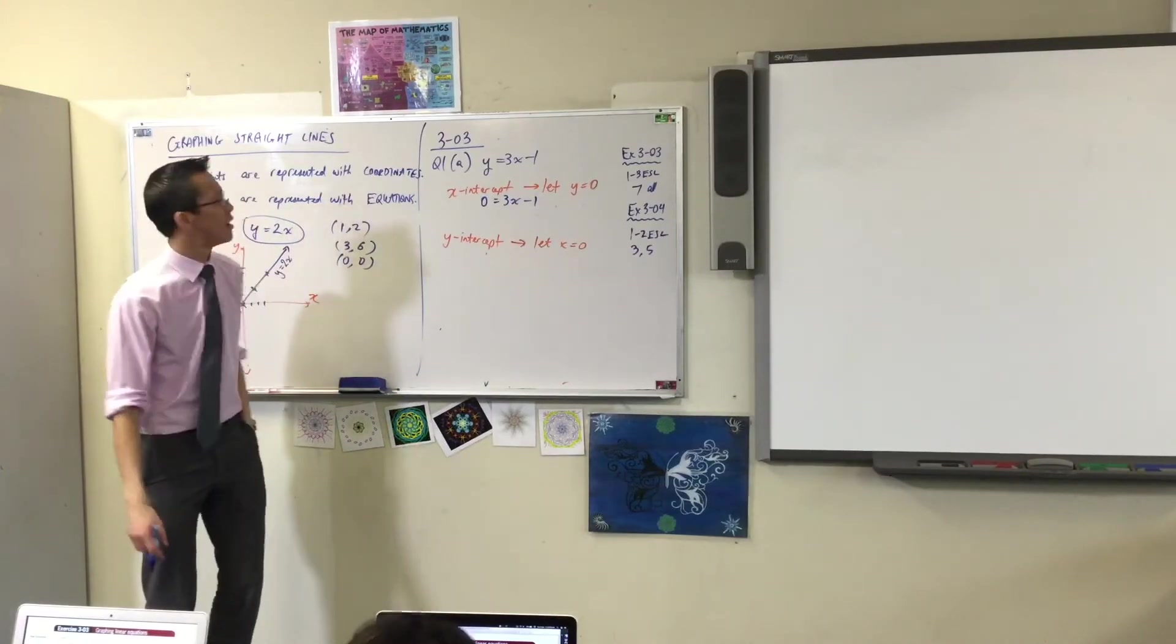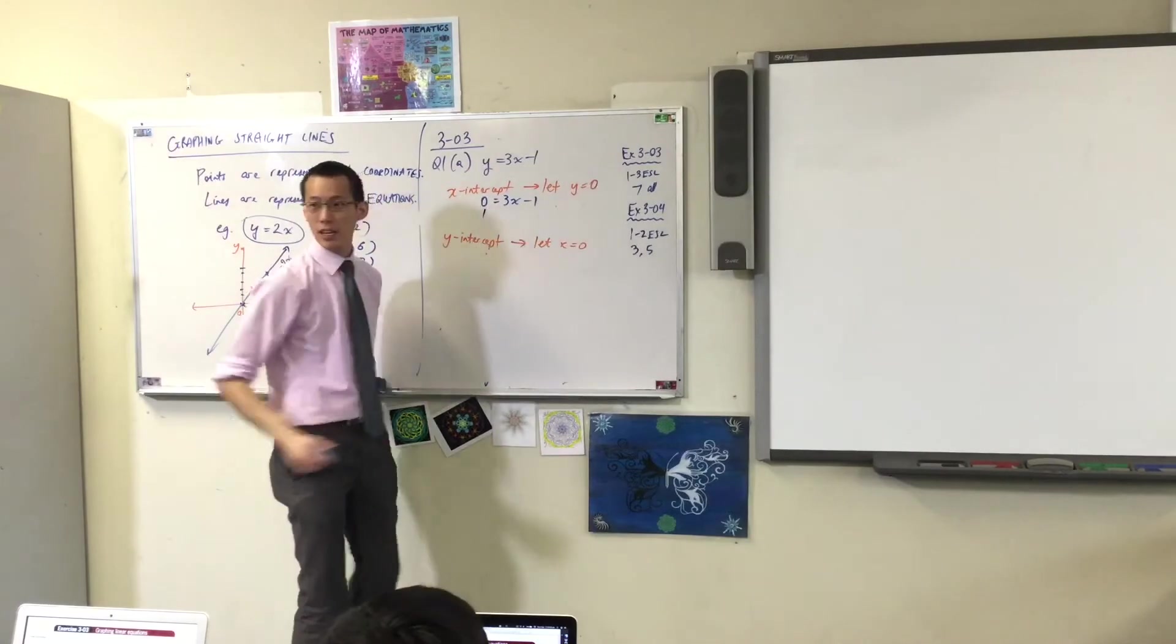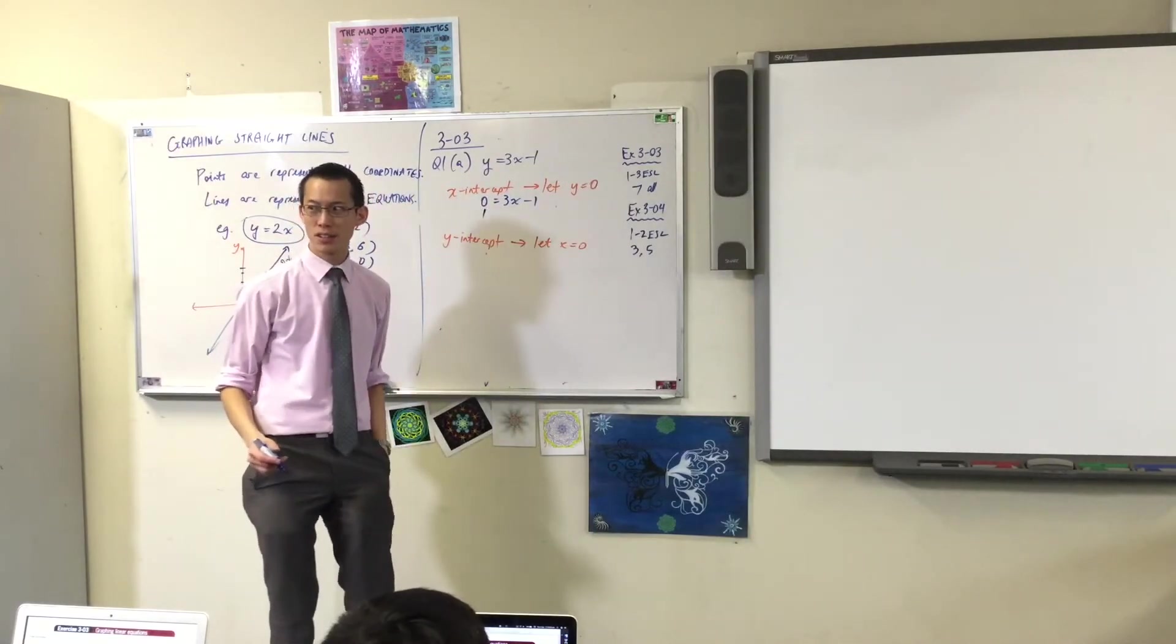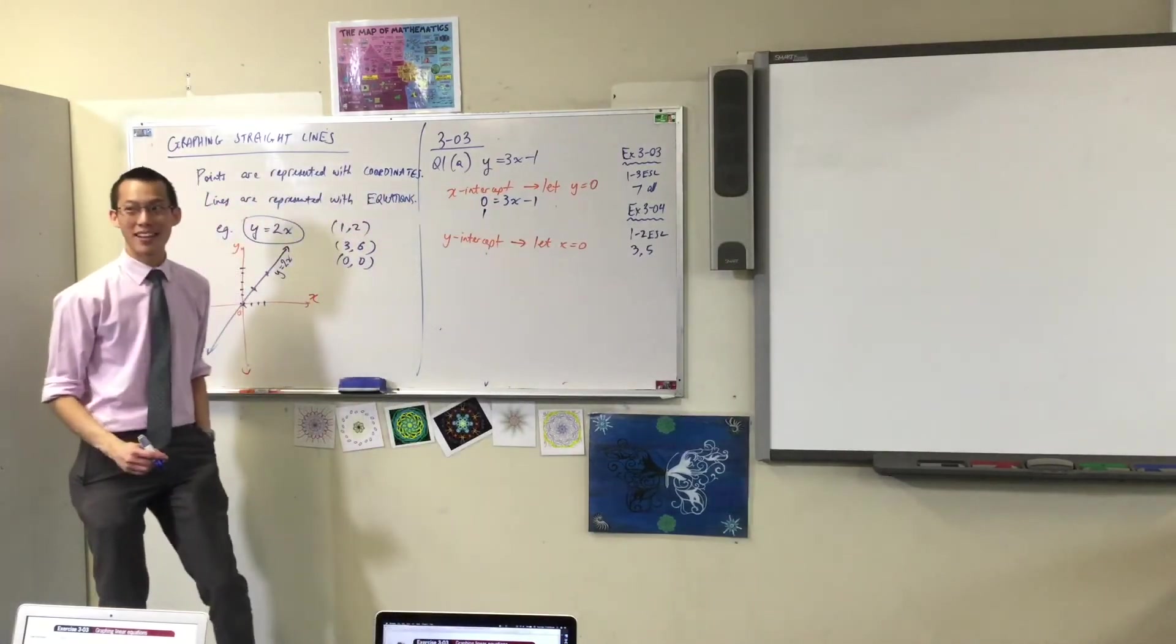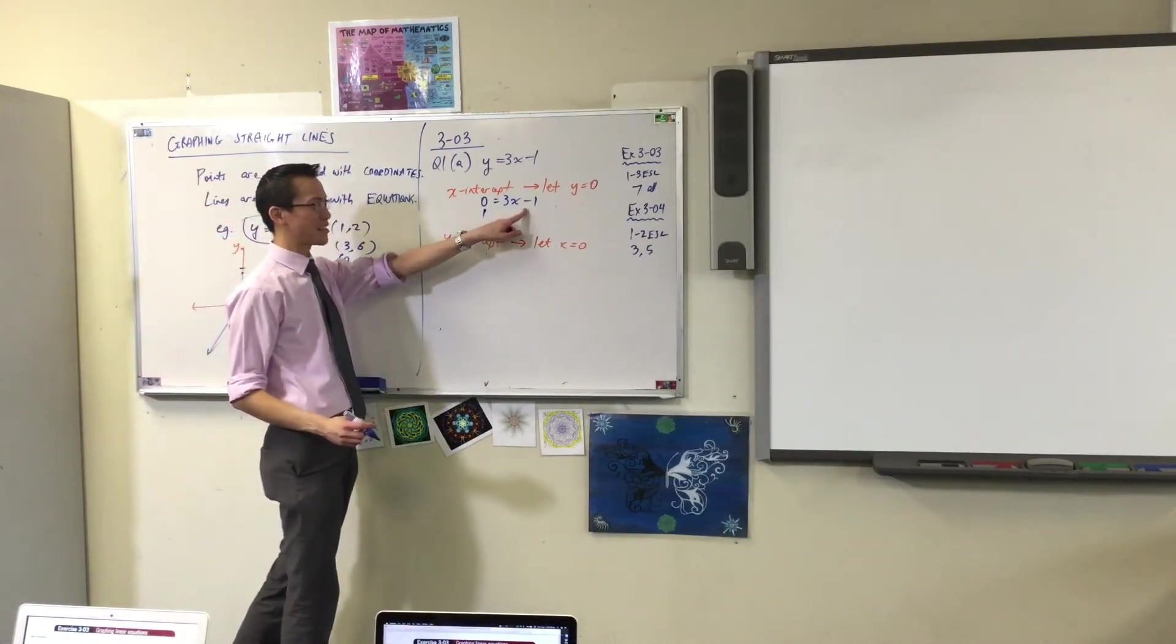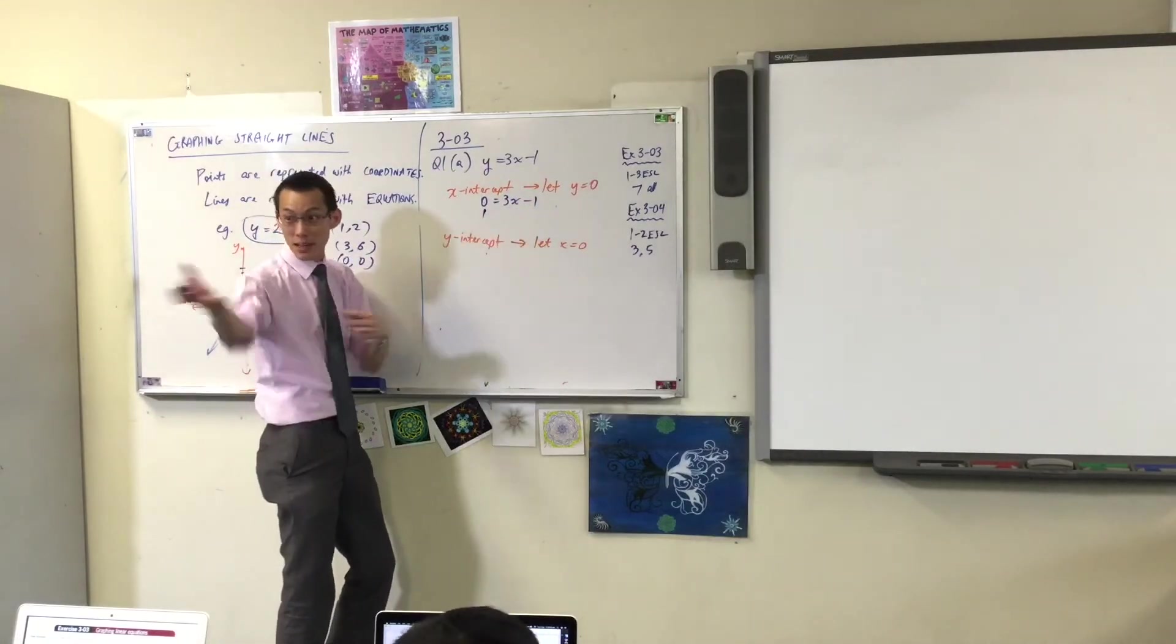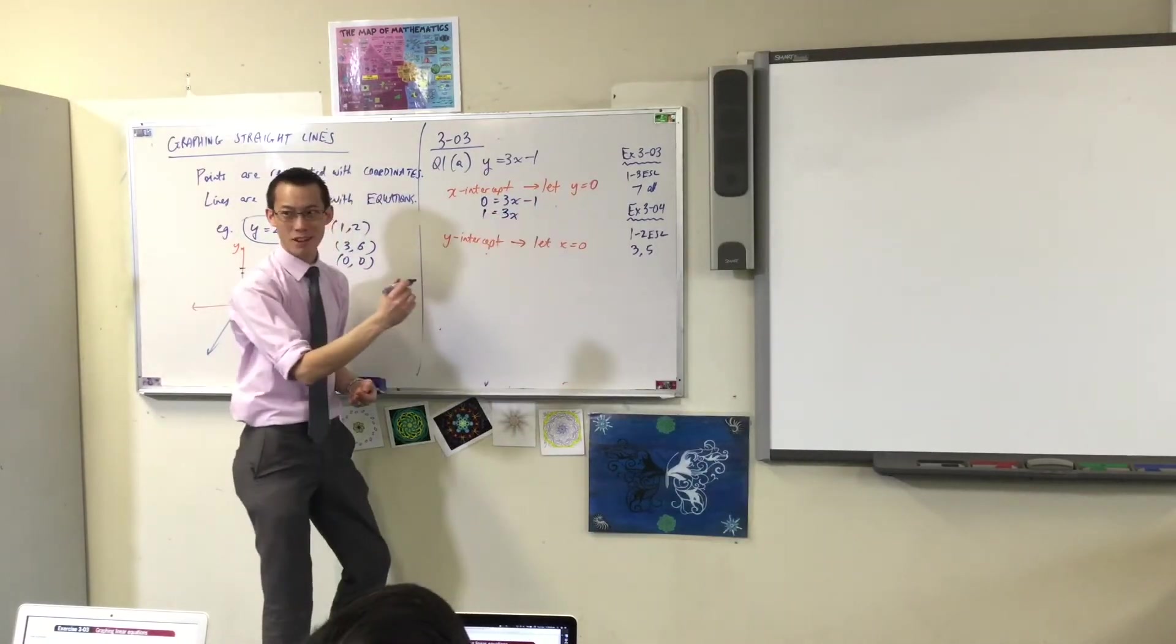Yeah, add 1. Okay, if I add 1 to both sides, that gives me a 1 over here. What does it give me on the right-hand side, Georgia? If I add 1 to both sides? If you add 1 to this, what happens? Yeah, that negative 1 and the 1, they become nothing. They do leave the 3x behind though, right?